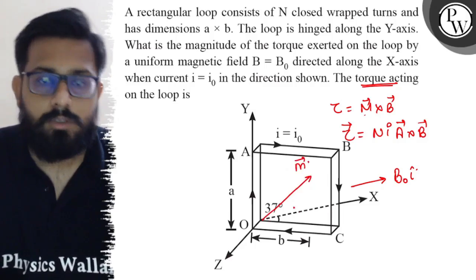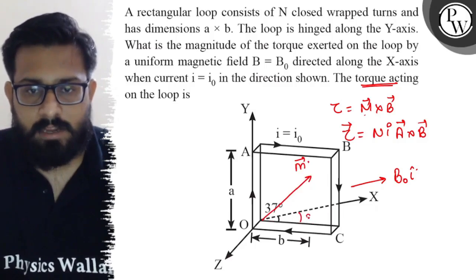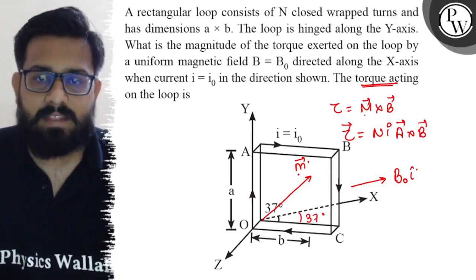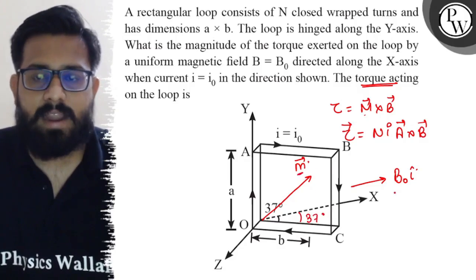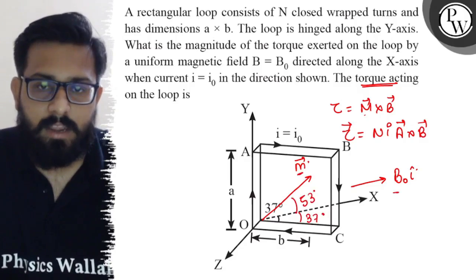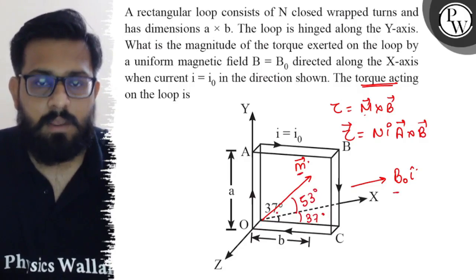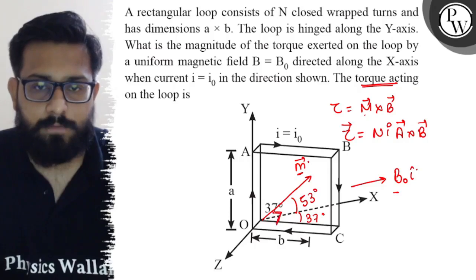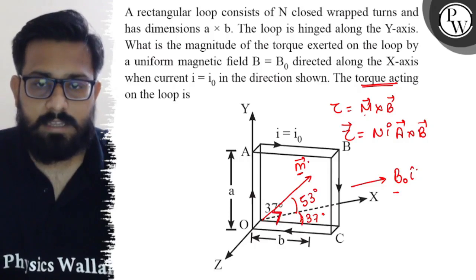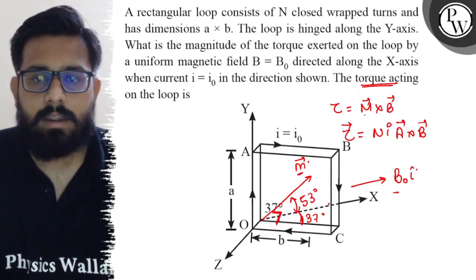As you can see here, the x-axis is making an angle of 37 degrees with this direction. So the angle between the magnetic moment and the magnetic field comes out to be 53 degrees — since the total is 90 degrees, and 90 minus 37 gives the remaining part as 53 degrees.